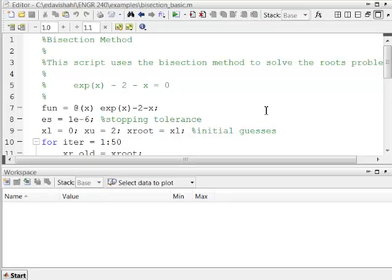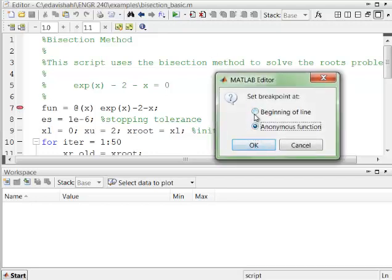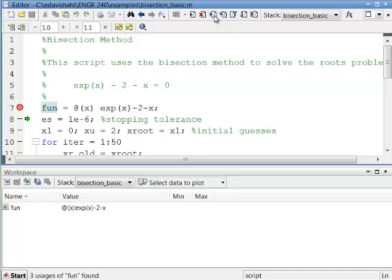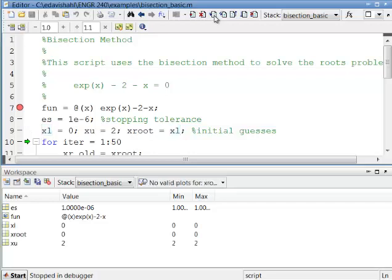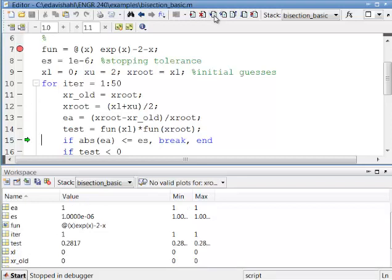Here we are in MATLAB and what I am going to do is use the debugger to watch what happens in the workspace as this bisection method m-file runs. I will set a breakpoint here and we will run the method. As I step through, we see that we have defined the function, the other variable definitions, stopping criterion and initial guesses. Here we will enter the for loop and store the old root estimate, bisect the bracket, calculate ea, and generate our test case to see which will be the new bracket.